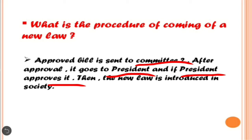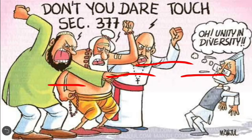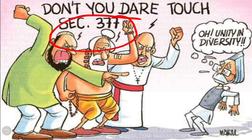Once the law is framed and approved by the President, it is then introduced and executed in the society, in the whole of the country. Here, Section 377 relates to unity in diversity. We have studied about secularism in the previous chapter, which means there is and there will be unity in diversity in our country. There is no discrimination amongst its people on the basis of gender, race, class, colour, or anything. All are equal before the law — that is what the law of equality says.